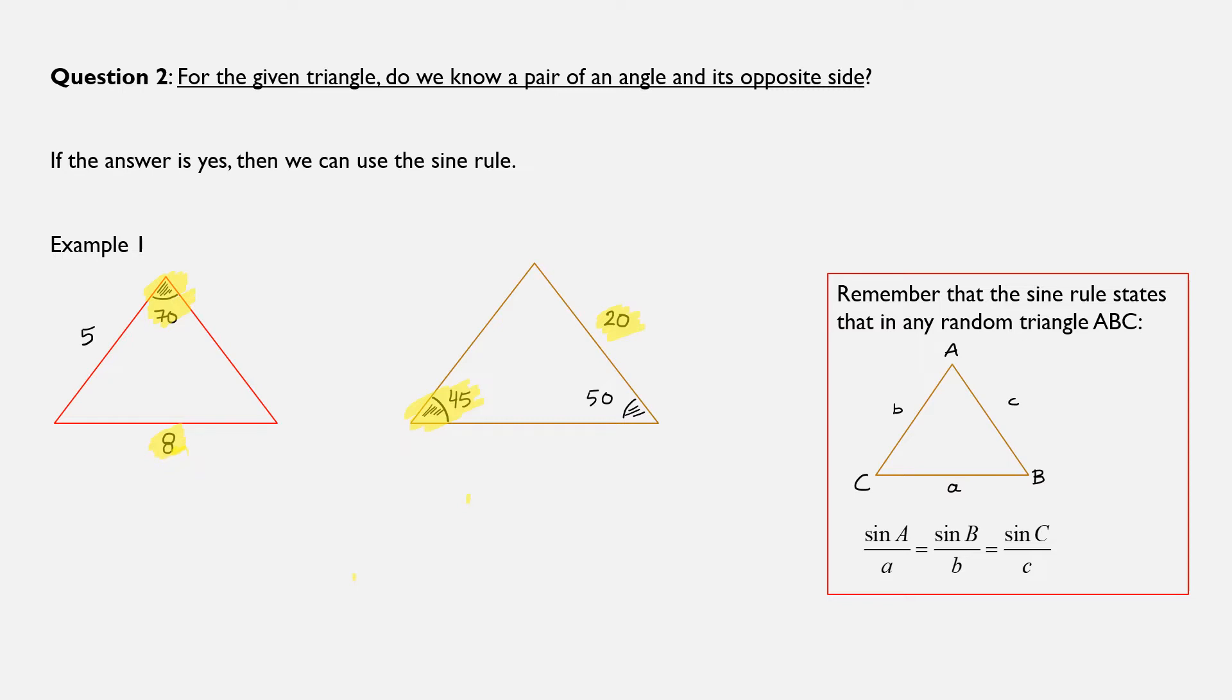This happened so that we could apply the sine rule. Remember that the sine rule states that in any random triangle ABC, even in a right triangle, we can take the quotients of sine of each angle over the length of each opposite side, and all these ratios will be the same. In math symbols, that could be expressed as sine A over a equals sine B over b equals sine C over c.